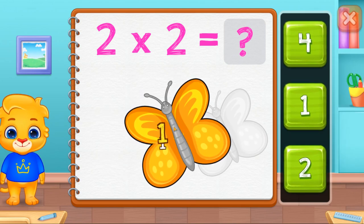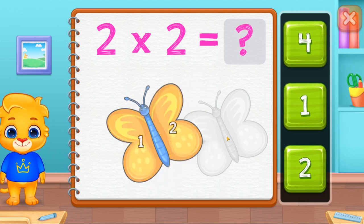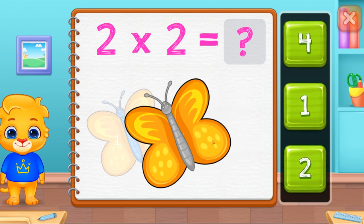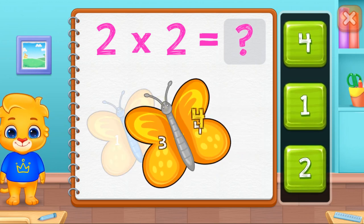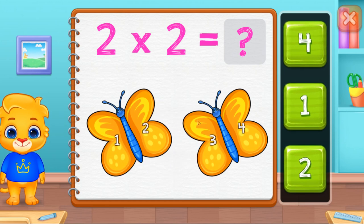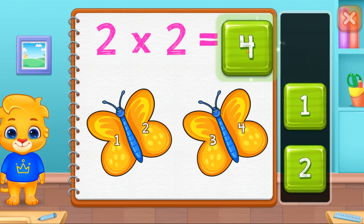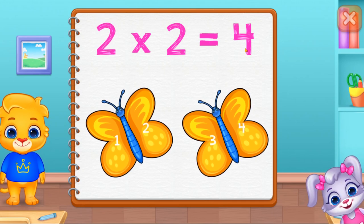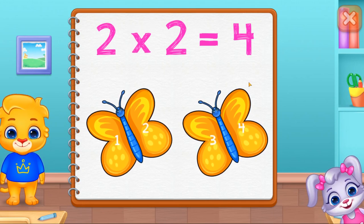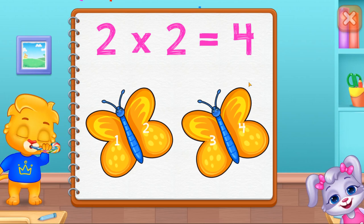One, two, three, four. Two times two equals four.